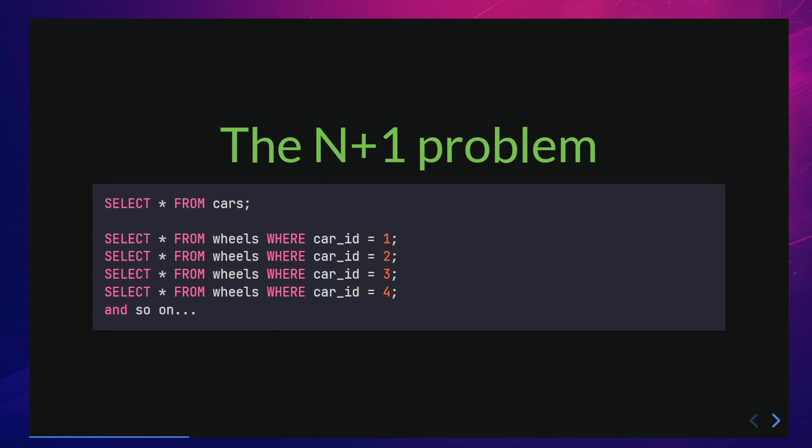The N+1 problem is a performance issue that arises when a single request to a database results in multiple separate queries, causing increased strain on the database and slower performance for the application. In the context of an ORM, the problem can occur when the ORM generates separate database queries for each object that needs to be loaded, even if the objects are related and could be loaded with a single query. To avoid the N+1 problem, it's important to be mindful of the queries generated by your ORM and to use techniques like eager loading or batch loading to reduce the number of separate queries.